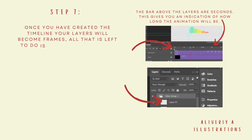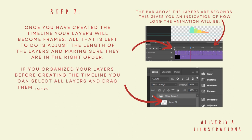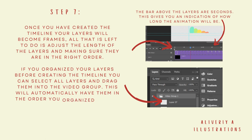All that is left to do is adjust the length of layers and make sure they're in the right order. If you organize your layers before creating the timeline, you can select all layers and drag them into the video group. This will automatically have them in the order you organized, all in one layer, making it a much easier process.